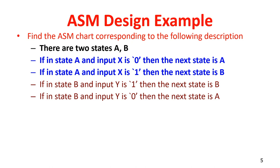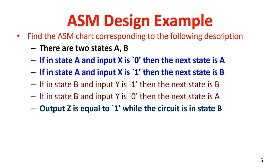From state A, based on input x — for 0 and 1 — the transitions are given. From state B, based on input y, different transitions occur. If you are in state B and getting y equal to 1, it goes to next state B, and output z equals 1 when the circuit is in state B. So from the ASM chart, output depends on the state — this is a Moore type machine.